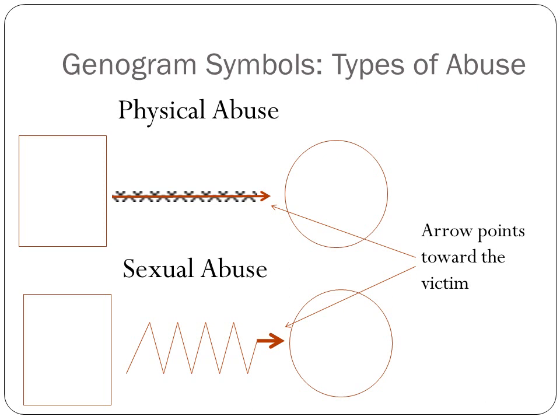For sexual abuse, instead of being a straight line, we have those mountain peak shapes — almost like conflictual — but at the end there is an arrow pointing towards the victim. So we know it's sexual abuse and not just a conflictual relationship because of the arrow at the end. An arrow always designates that some type of abuse is being committed or has been committed. This does not have to be current abuse — it can also be abuse that occurred in the past.